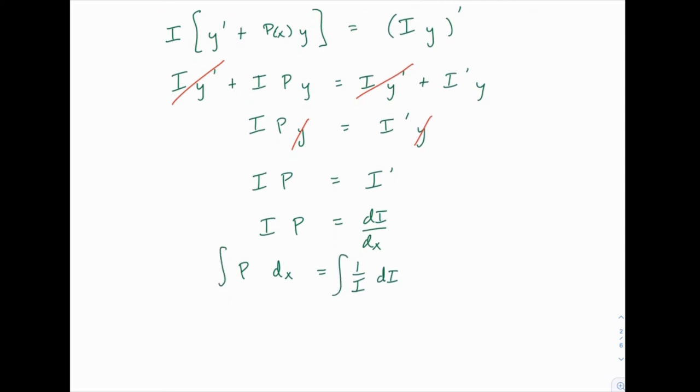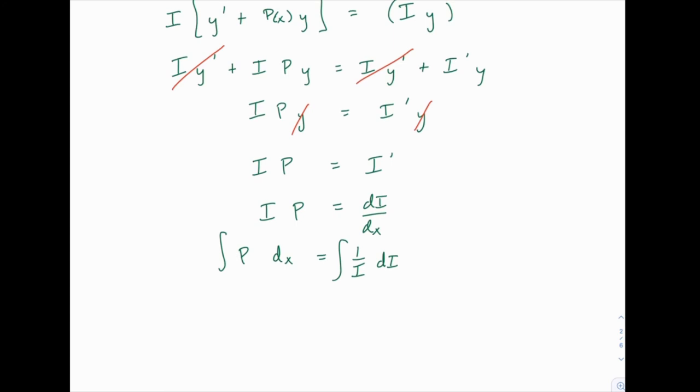And then I can integrate both sides. Now notice what happens when I integrate 1 over i di. I get ln of i. And then over here I still have the integral of p of x, which depends on what p of x is of course, so we'll just leave that as is. And then we can solve for i by raising e to both sides.